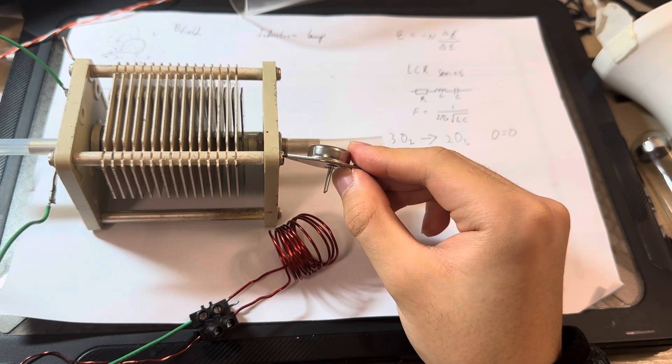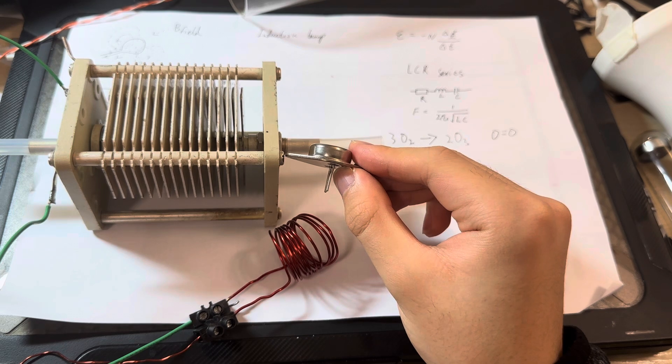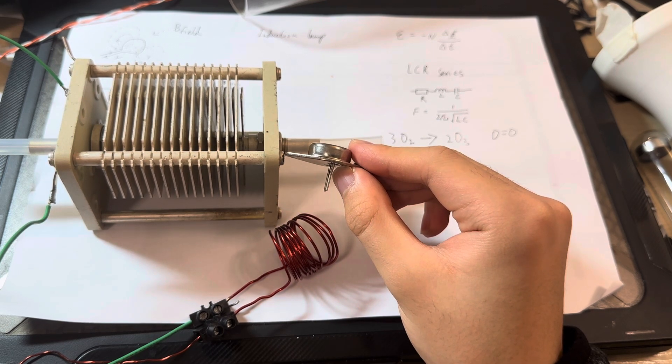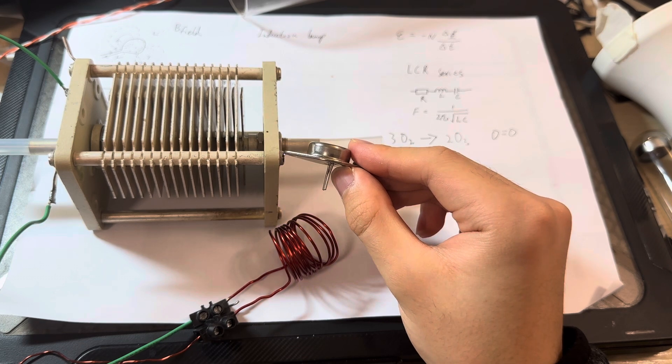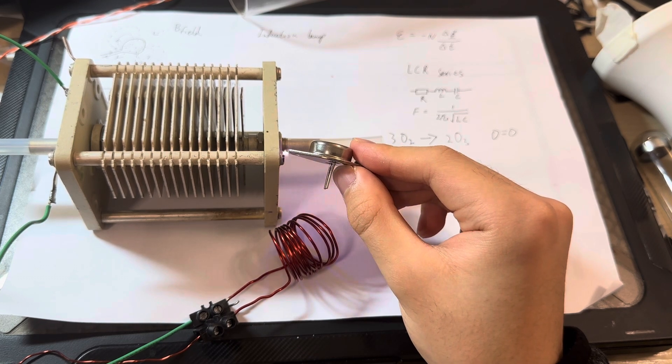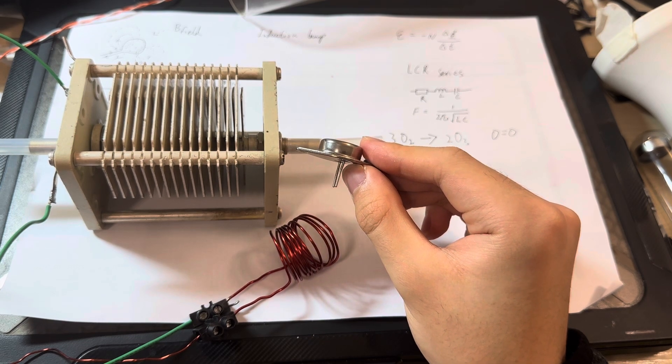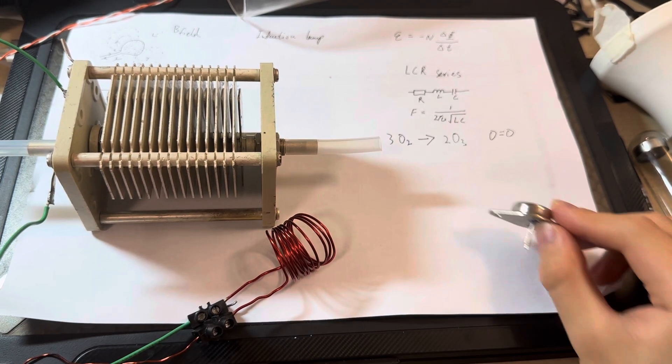At a certain point we get a really intense discharge. We can pull a quite significant arc. And this arc is really high temperature as well as pretty high voltage.